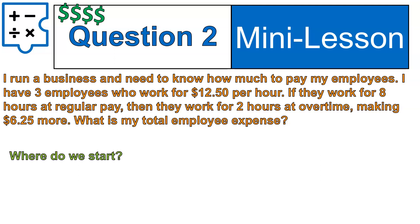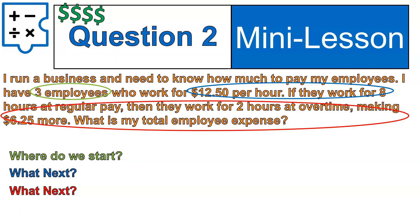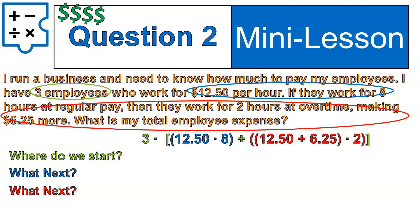All right, we are back. I'm going to show you what I do to solve this problem. First off, I'm saying, where am I starting? In this case, I'm going to start with three employees — I know I've got three different people who are working. They work for $12.50 per hour for eight hours. The next important piece is they're working two hours at overtime where they make $6.25 more. So I'm going to find out how much one employee makes and then multiply that whole thing times three at the end.